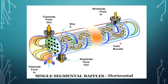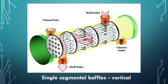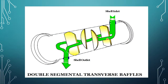This image shows a horizontal single segmental baffle, which is used when no phase change takes place. This image shows a vertical single segmental baffle, which is mainly used when shell side condensation takes place. This image shows how double segmental baffles look.